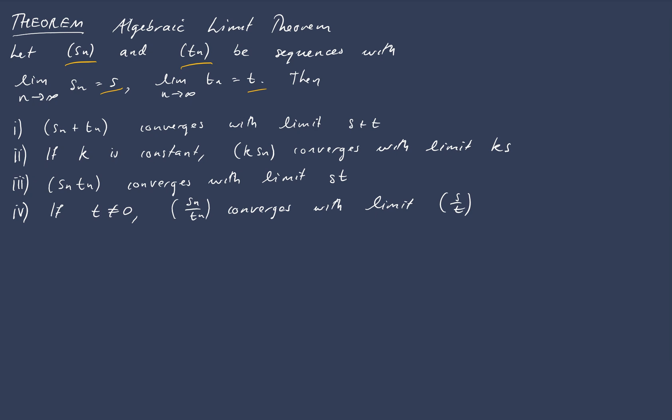Now the algebraic limit theorem gives us four results that we can freely use once it's been proved. First is that the sequence Sn plus Tn where we add the sequences term-wise also converges and the limit is what you'd expect. It converges to S plus T. Similarly, if we take the sequence Sn and multiply every term by the same constant then the resulting sequence KSn also converges and has the limit that you'd expect, KS.